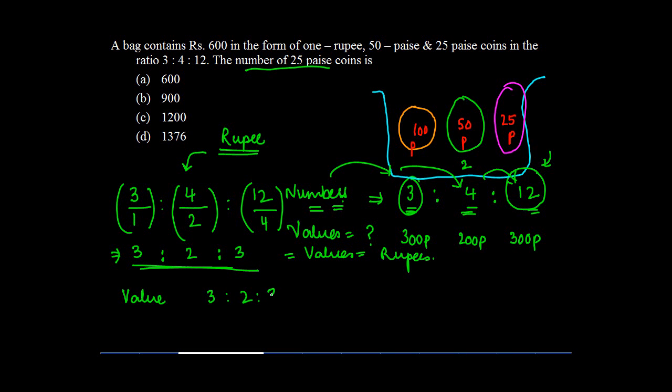But now we have a consistent thing in terms of the value over here. 3 is to 2 is to 3. What do we need to find out? We need to find out the number of 25 paise coin. So the value of 25 paise coin is how much? It is 3 divided by 3 plus 2 plus 3. Earlier I couldn't have done this as 12 divided by 12 plus 4 plus 3 for the simple reason that this 4 is not comparable to this 12, is not comparable to this 3.